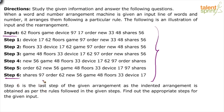Look at the numbers: 97, 62, 56, 48, 33, 17 — the numbers have been arranged in descending order. And look at the words: shares, order, new, game, floors, device — these have been arranged in reverse alphabetical order: S, O, N, G, F, D. So we are looking for an output with words and numbers in alternate positions starting with a word, words in reverse alphabetical order, and numbers in descending order.